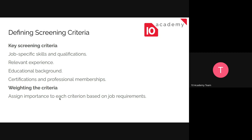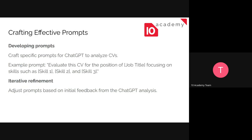These criteria can be weighted - you assign importance to each criterion based on the job requirements. For instance, you might give relevant experience a 40% weight, meaning AI is more focused on experience than other criteria. The weighting is not a must, but if you prefer to weight it, it's an available option with AI.